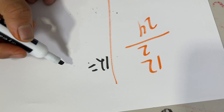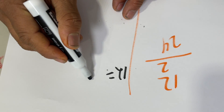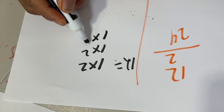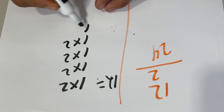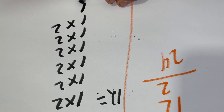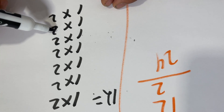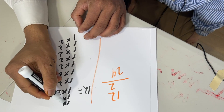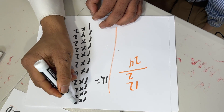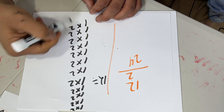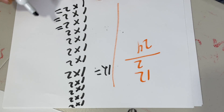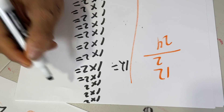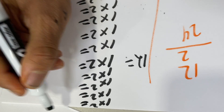So 1 times 2, repeated twelve times. Let's count them: 1, 2, 3, 4, 5, 6, 7, 8, 9, 10, 11, 12 — twelve ones. Each 1 times 2 equals 2, so we add 2 twelve times.